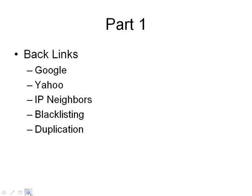The next thing I want to report on are backlinks. I'm looking at Google and Yahoo, looking at inbound and outbound links, and looking for things like IP neighbors — meaning common misspellings or plays on your domain name. Then I want to look at blacklisting: has your domain name been blacklisted by any of the ISPs? Are any of your IP addresses blacklisted for spamming or illegal content? And finally, I want to make sure you're not simply an affiliate reposting duplicate content.